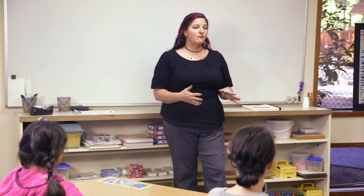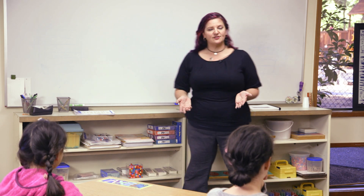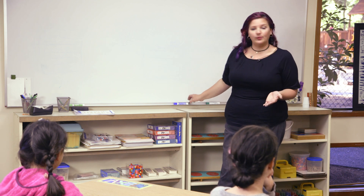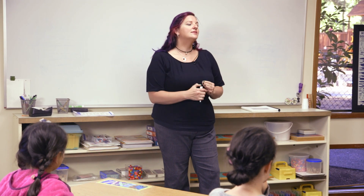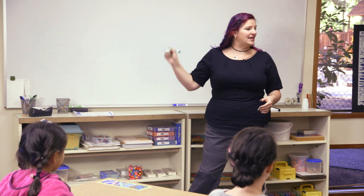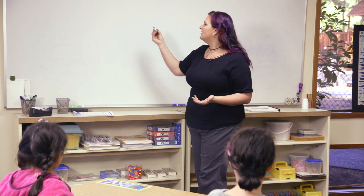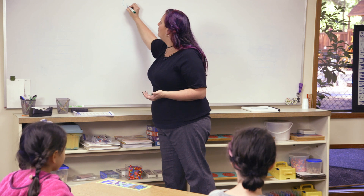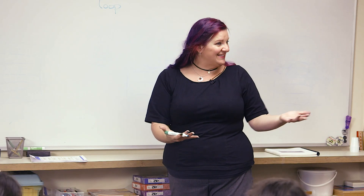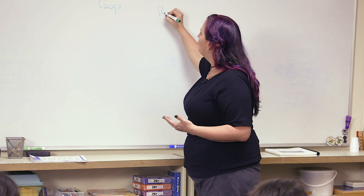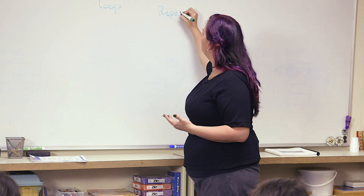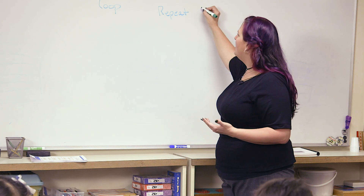First we need to talk about what a for loop is, because a for loop is different than the kinds of loops we've used before. What do you remember about a loop? It's something that repeats over and over until you tell it to stop. A loop is something that repeats and you get to tell it when to stop. In CS Fundamentals, we call it a repeat block, so we might repeat something five times.